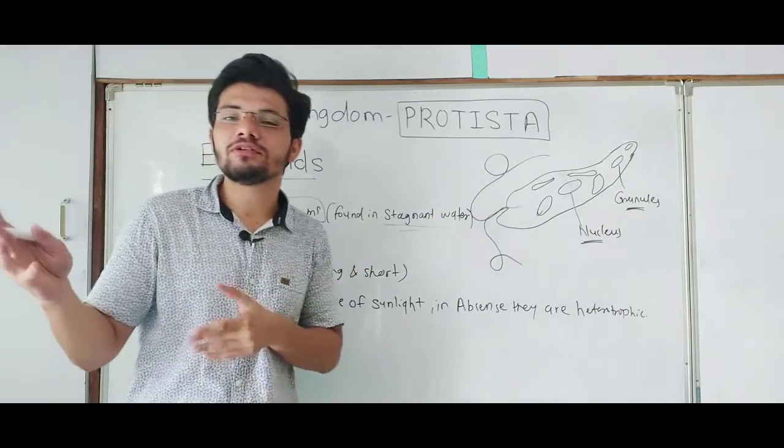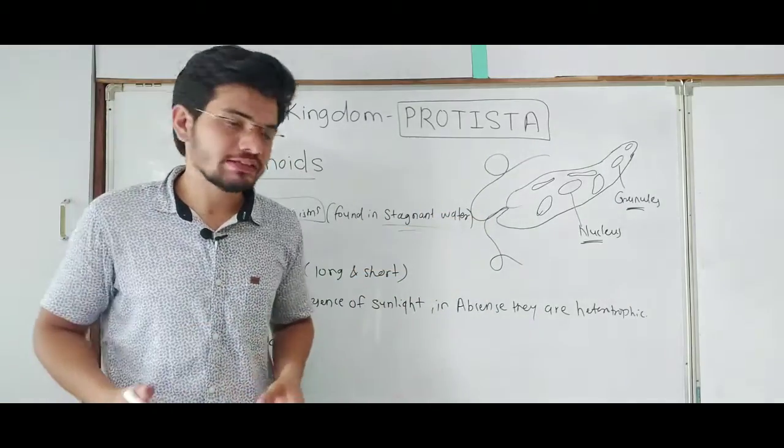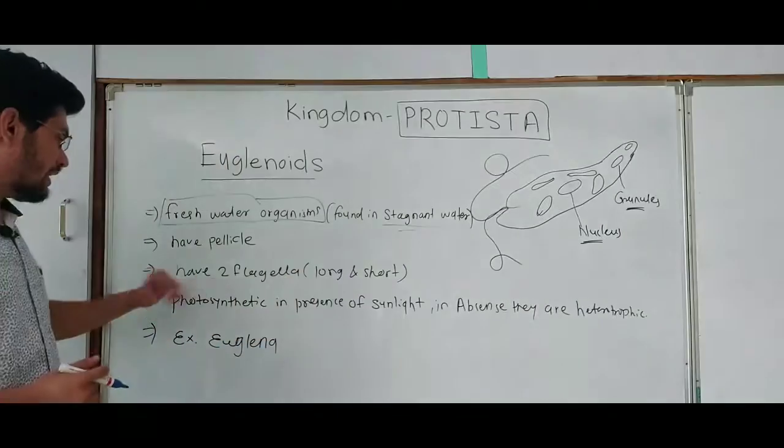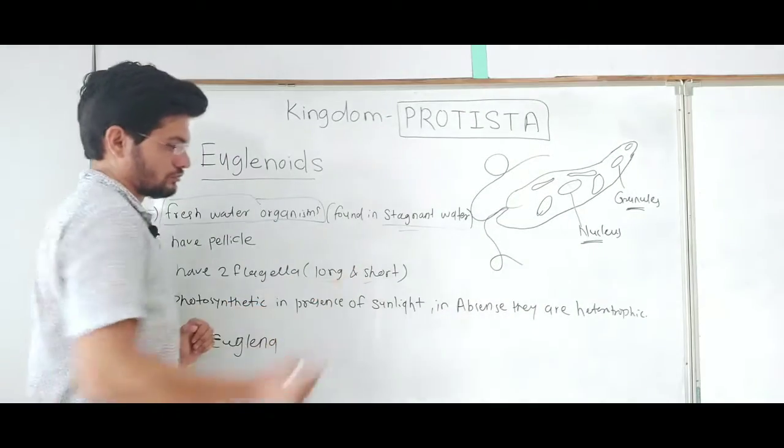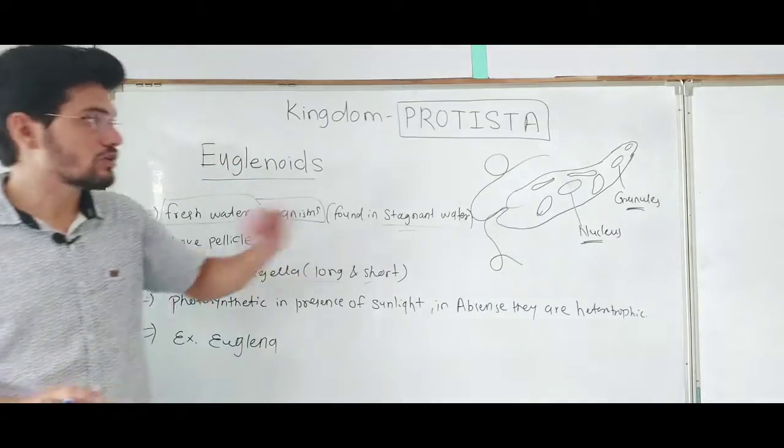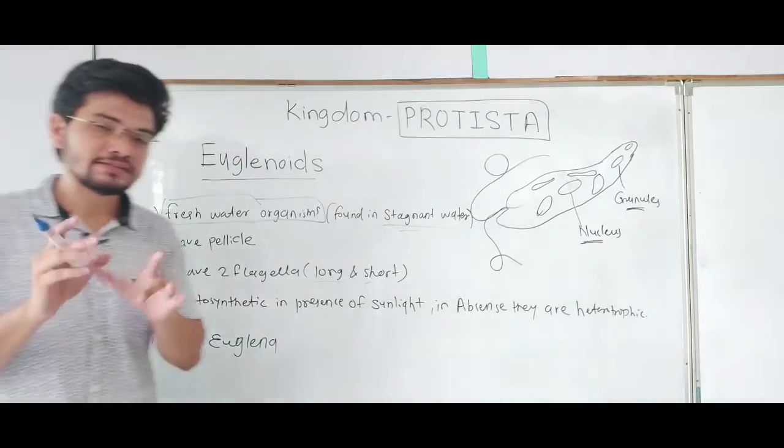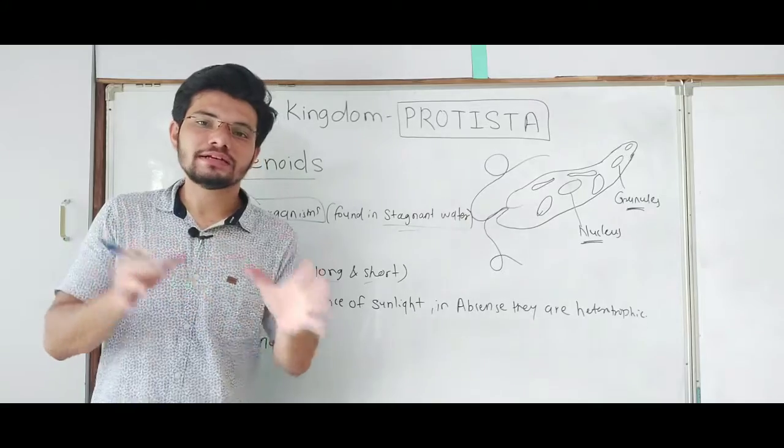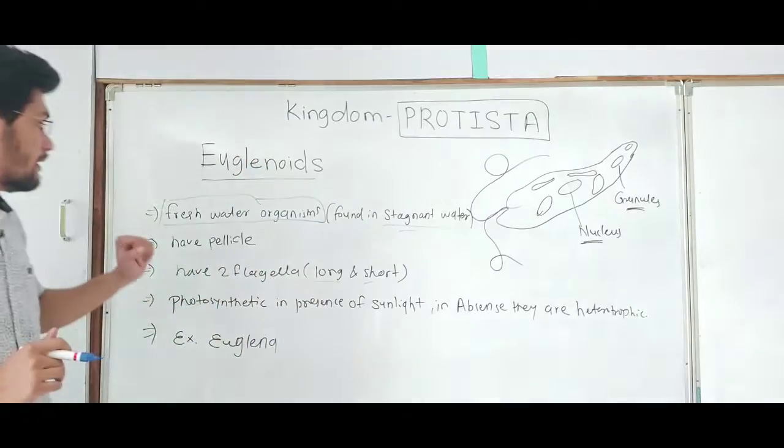But not longitudinal and transverse like dinoflagellates. The flagella are short and long - one flagellum will be shorter and the other will be longer in case of euglenoids. So that is the main difference between dinoflagellates and euglenoids.